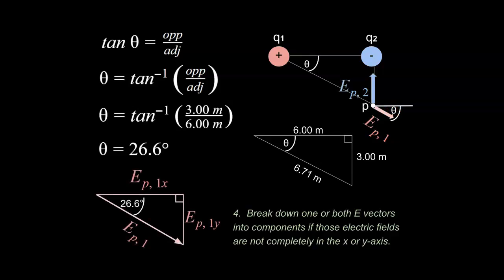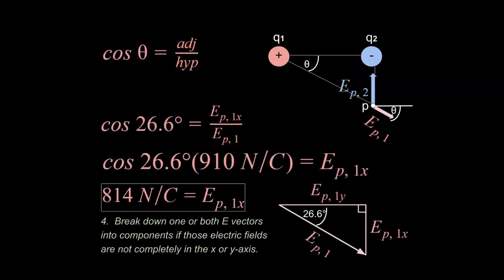We've solved for EP1x and EP1y using the 26.6-degree angle and the known magnitude of EP1. We break EP1 into x and y components. These will be used to find the sum of the vectors in x and the sum of vectors in y — that's where we're going with this, as described in step four of our strategies.